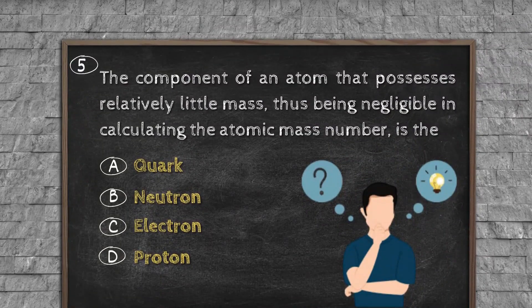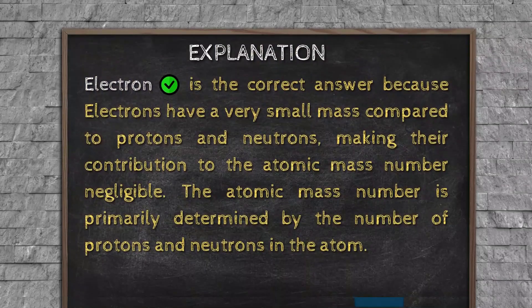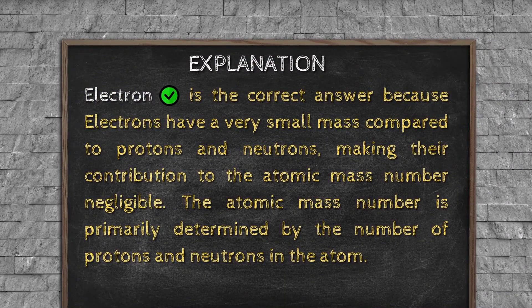Question number five. The component of an atom that possesses relatively little mass, thus being negligible in calculating the atomic mass number, is: Option A, quark. Option B, neutron. Option C, electron. Option D, proton. Explanation: Electron is the correct answer because electrons have a very small mass compared to protons and neutrons, making their contribution to the atomic mass number negligible. The atomic mass number is primarily determined by the number of protons and neutrons in the atom.